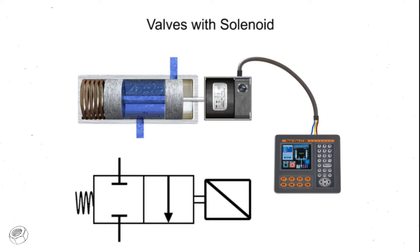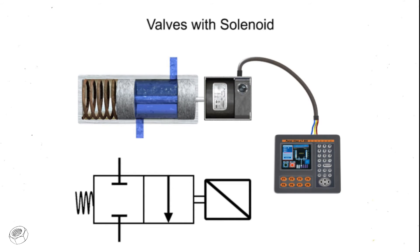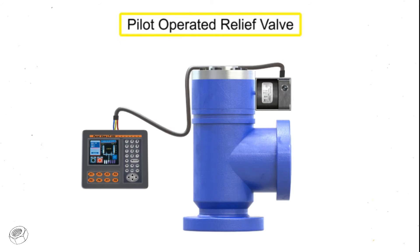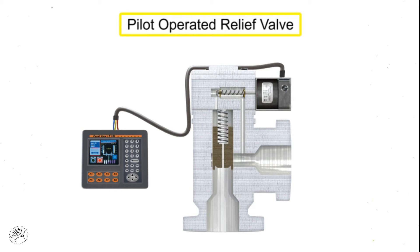Solenoid valves are said to be either direct or pilot operated. A direct operated valve is shown here. A pilot operated valve has a pilot and bleed orifice and utilizes line pressure for operation. This is a pilot operated relief valve.